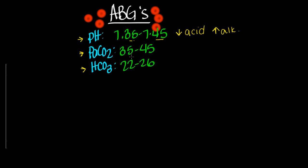Now our PaCO2, or CO2, this is going to represent respiratory function. When you think about CO2, think about acid. If you think about this as an acid, then you're going to know that if it's too high or too low, what the differences are. If we have a number under 35 for our CO2, and we know that CO2 is an acidic property, then if it's less acidic, it's becoming alkaline. So under 35, think alkalosis. Over 45 — meaning it's climbing, getting higher — then we are becoming more acidotic.